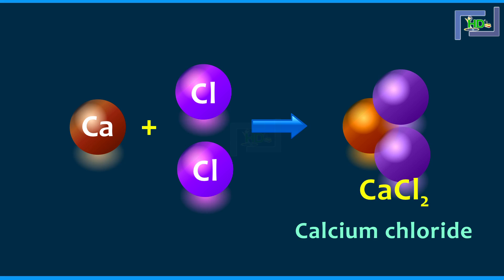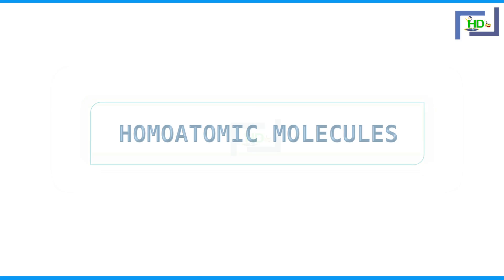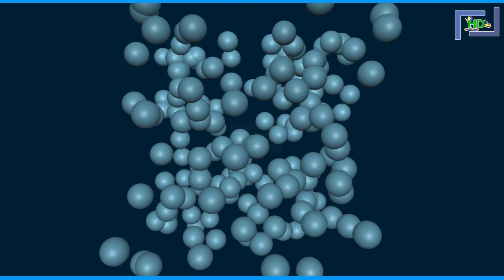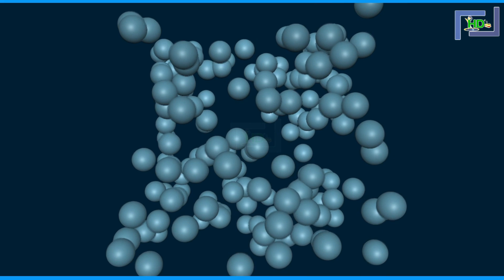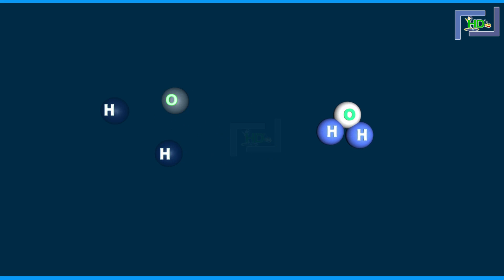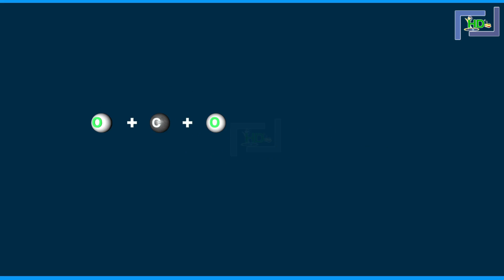An atom is the smallest particle of an element that exhibits all its properties and may or may not have an independent existence. A molecule is the smallest particle of a compound which is capable of independent existence. Molecules are formed when atoms of one or more elements combine in fixed ratios.